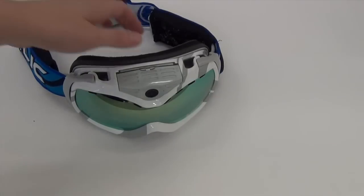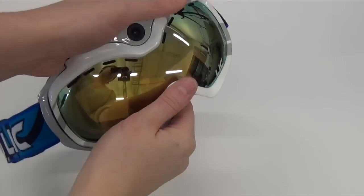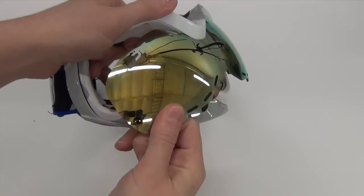Pick up your Apex and hold it by the flexible frame. Pull down on the nose area of the frame and the lens will pop out. Rotate the goggle and pull down on the lens to remove it from the frame.